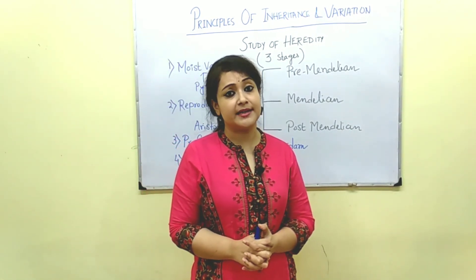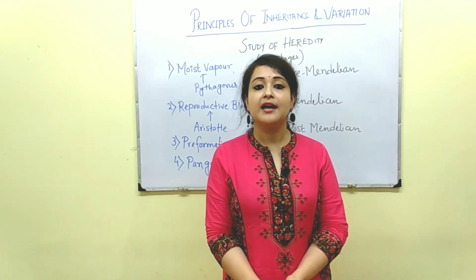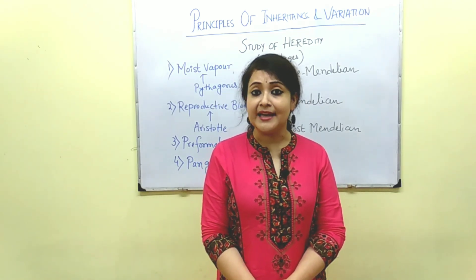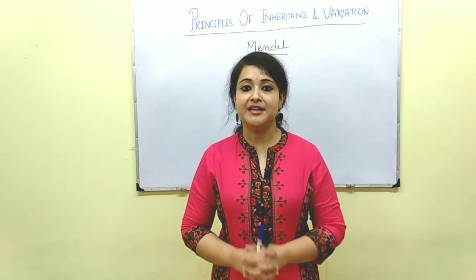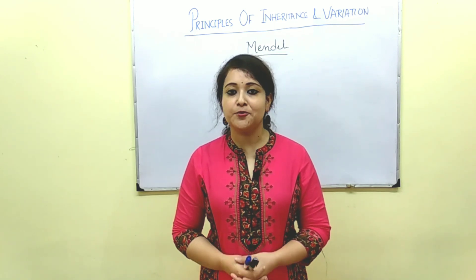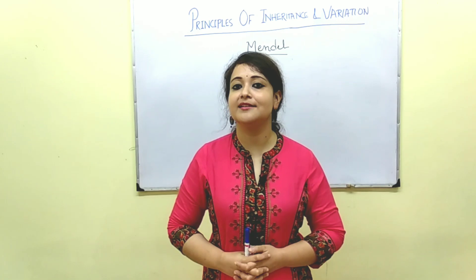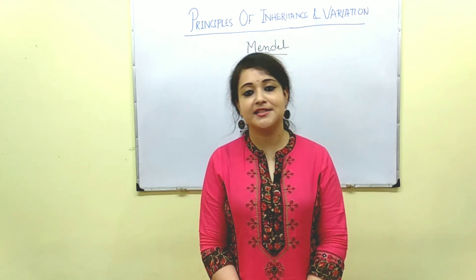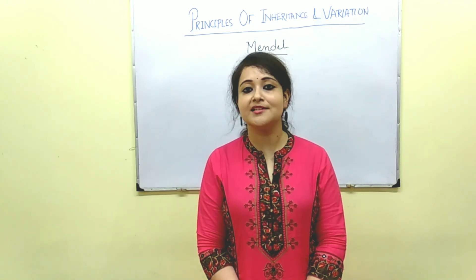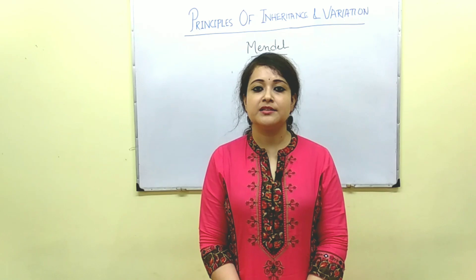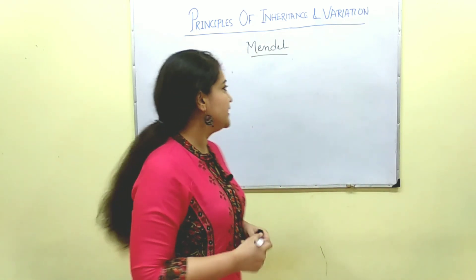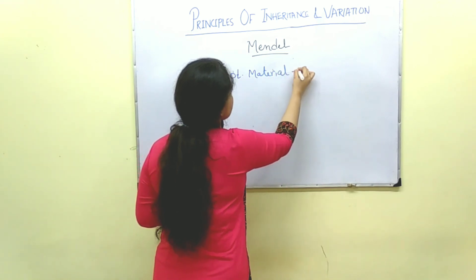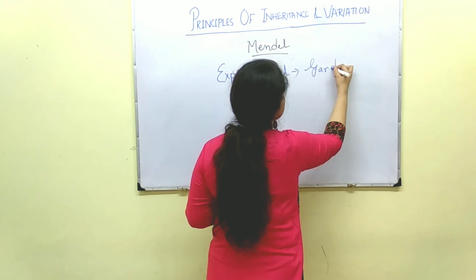These pre-Mendelian concepts were not accepted because they favored blending inheritance, and blending inheritance doesn't actually happen. So these theories got rejected, and then came Mendel. The Mendelian era started with Mendel, an extremely brilliant and talented scientist, but regarded as one of the most unlucky scientists of his time — he didn't get any recognition during his lifetime because he was ahead of time. Mendel was an Austrian monk, and his experimental material was garden pea.